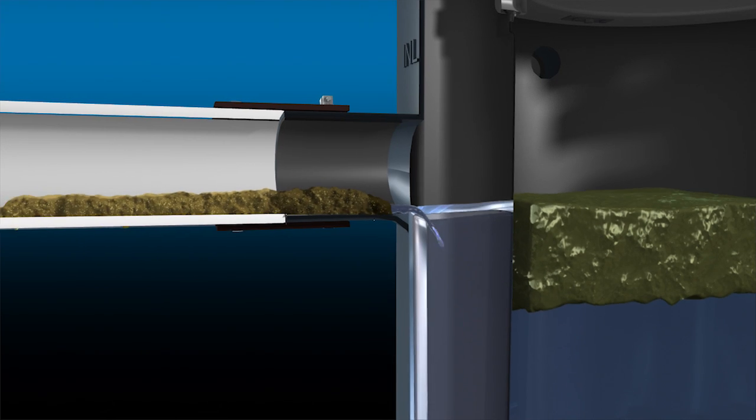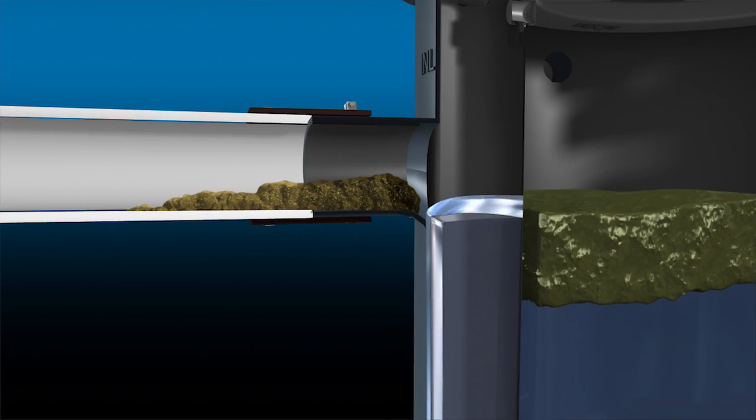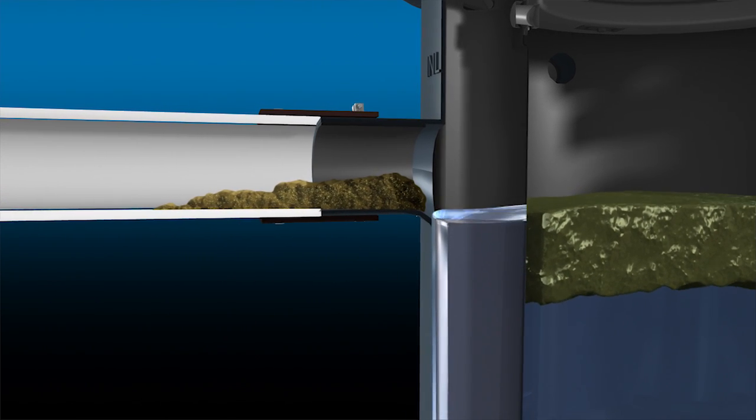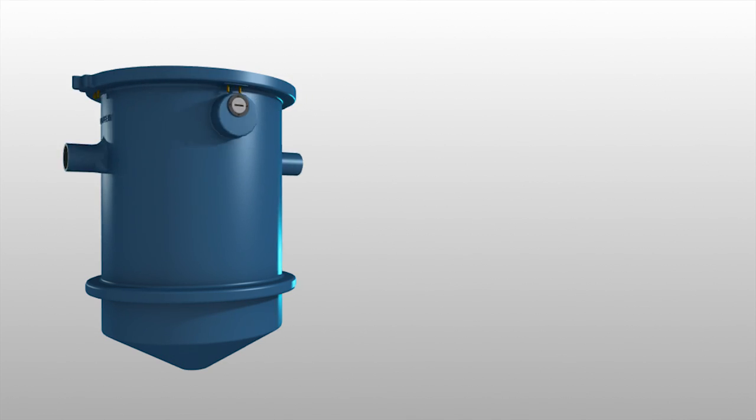As the incoming flow slows to a stop, a small grease residue is left in the inlet of the unit. Here it will stay until another flow event, and the cycle will repeat.